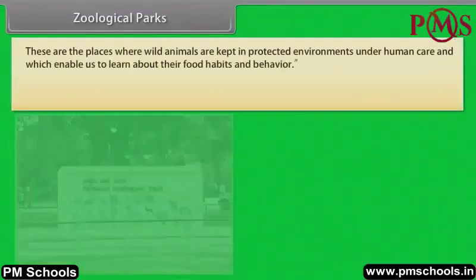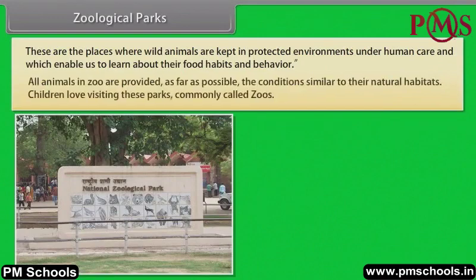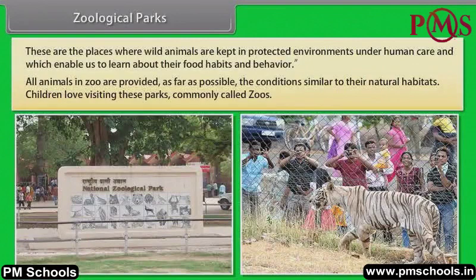Zoological parks are places where wild animals are kept in protected environments under human care, enabling us to learn about their food habits and behavior. All animals in a zoo are provided, as far as possible, conditions similar to their natural habitats. Children love visiting these parks, commonly called zoos.